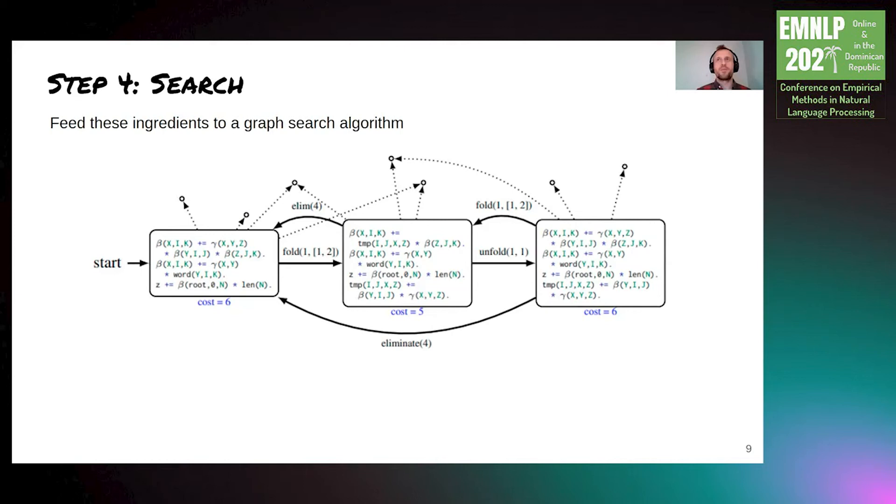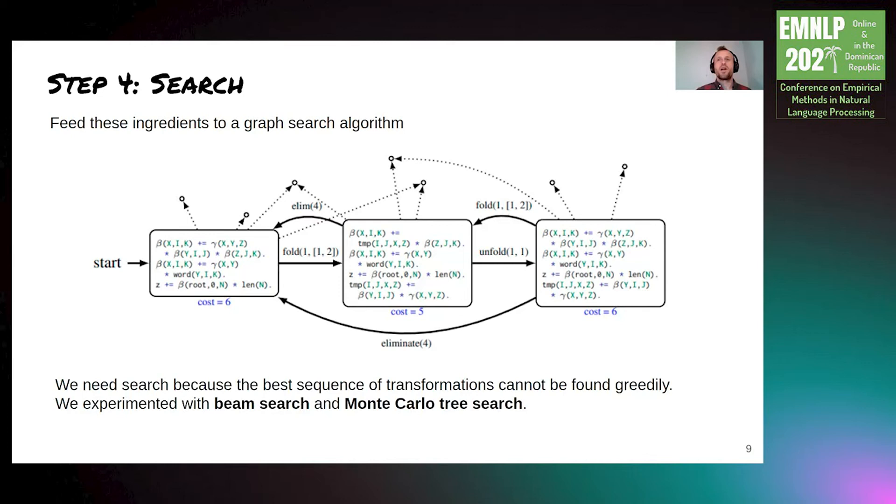So we throw all these ingredients into our graph search problem. And the reason why we need search is just that sometimes we need to search over many possible sequences of transformations in order to find the best one, and we can't do it greedily. In our experiments, we tried beam search and Monte Carlo tree search, as they seem to be good candidates for large search spaces.